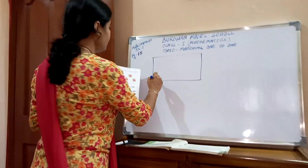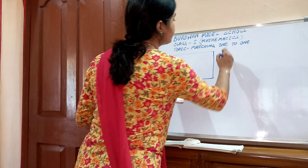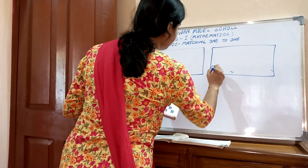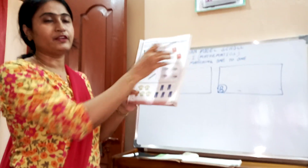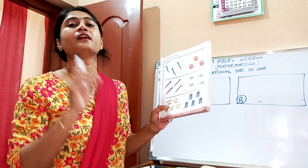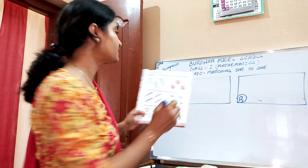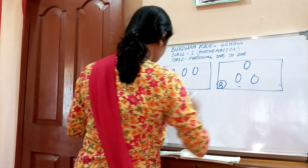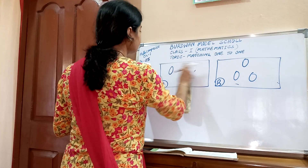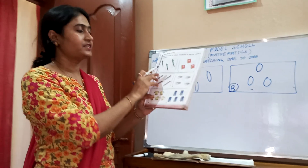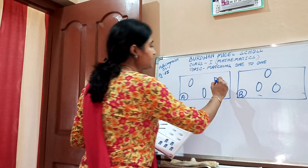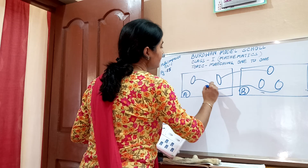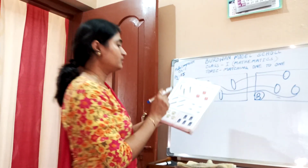There are two boxes — this is A and this is B. I will not draw the actual objects; I will draw circles instead. Here are three paints and three books. We have to match one to one: book with paint, book with paint, and book with paint.